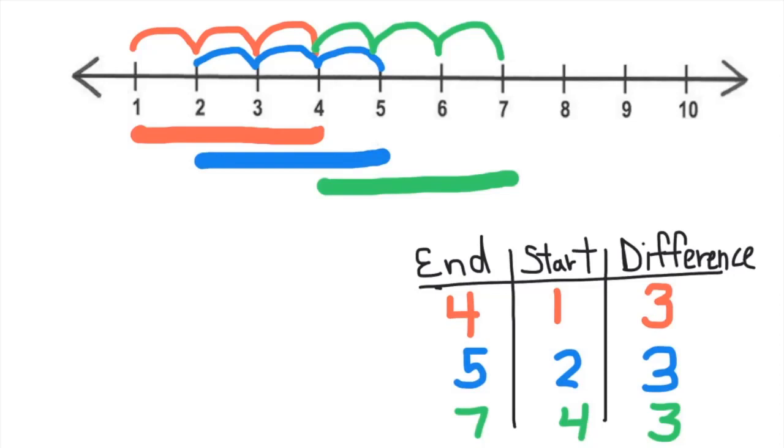So what's really interesting is students will start to notice, because you've asked them, take a look at the relationship between the red equation and the green equation. What's happening? What do you notice? What's that relationship? Oh, we've actually increased the ending point by 3 and the starting point by 3.